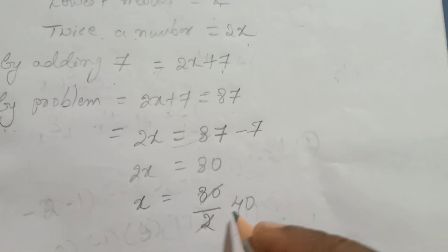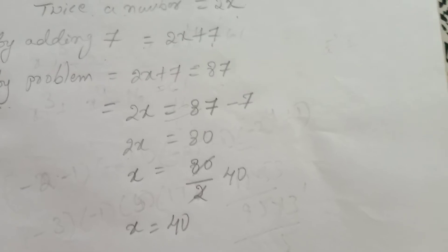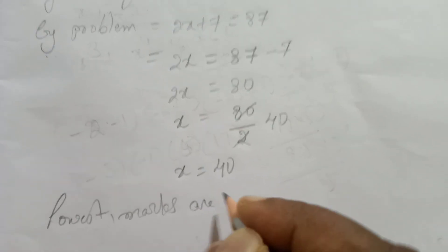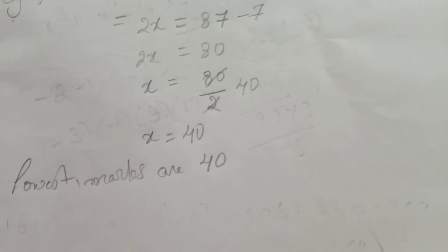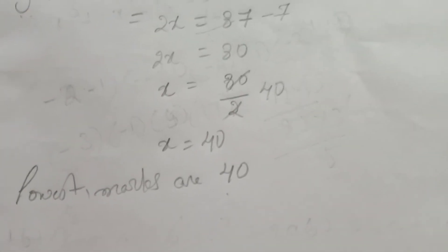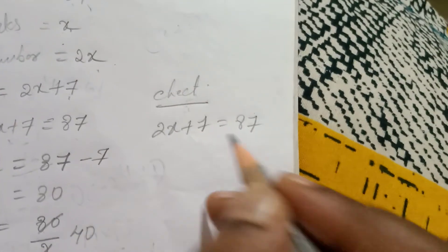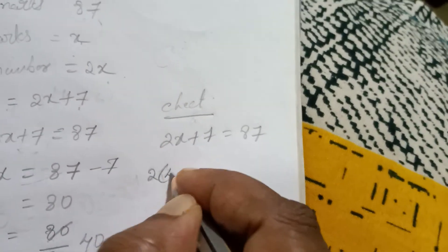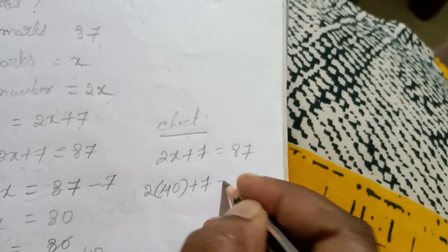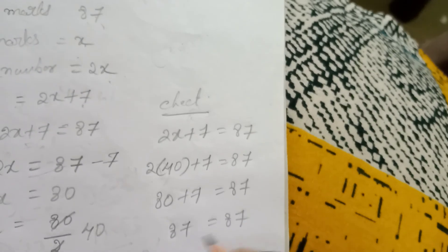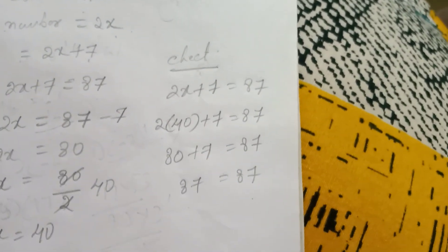The lowest marks is 40. Let's check: 2x plus 7 equal to 87. Substituting x equals 40: 2 into 40 plus 7 equals 80 plus 7 equals 87. Left side is equal to right side. Verified.